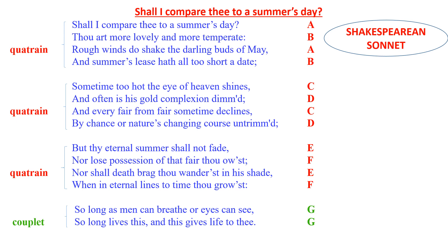The Shakespearean sonnet uses an alternating rhyme scheme: ABAB CDCD EFEF in the three quatrains, and GG in the couplet. In the three quatrains the poet establishes a theme or a problem, and then resolves it in the final two lines, the couplet.